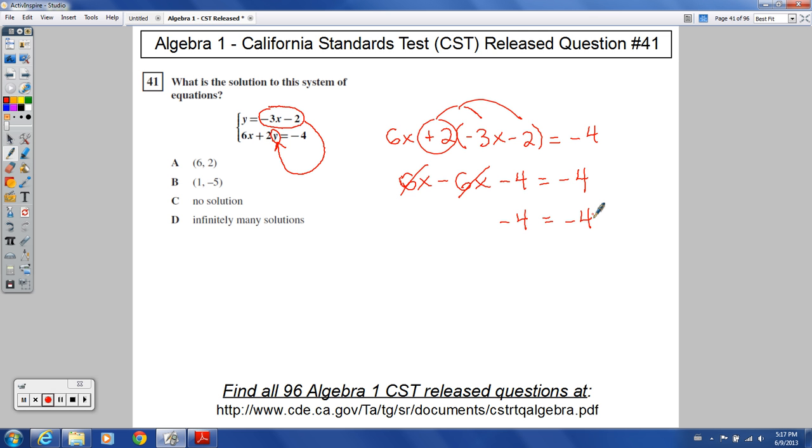So, you might say to yourself, what does that mean? If I have something equals itself, is there ever a time when this isn't true, this equation? Is there ever a time when negative 4 does not equal itself, negative 4? I would say, no, this is always true. So, if something is always true, you are going to have this as your answer: infinitely many solutions.